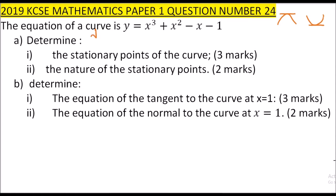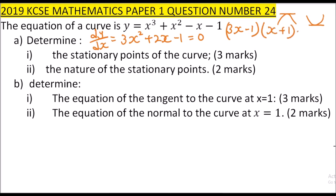We differentiate: dy/dx equals 3x squared plus 2x minus 1. Since the gradient equals 0 at the turning point, we equate this to 0. This is a quadratic equation, and when you factorize it you get (3x minus 1)(x plus 1) equals 0.